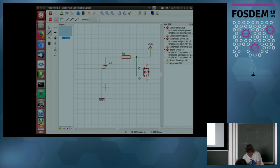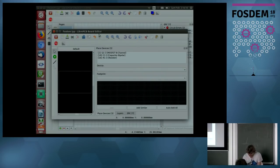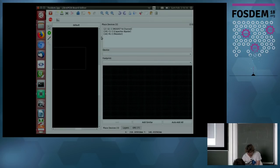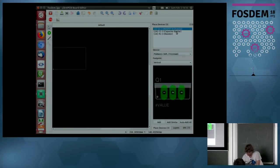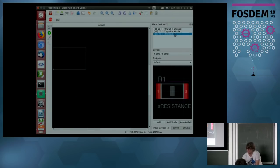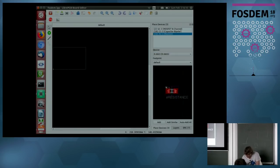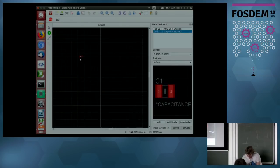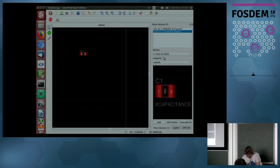Whatever. Doesn't make sense, but... So, okay. Now, in the board editor, we can see there are three parts which are missing on the board right now. So, we can choose, for example, the resistor, choose the exact device, add it, and the other devices.